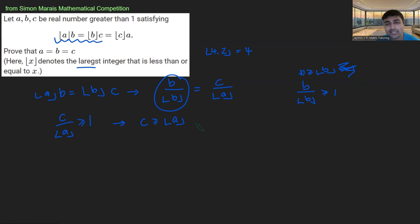I can go one step further with this. We know that floor of A is an integer. And in particular, it's an integer which is less than or equal to C. And so therefore, I know that floor of C must be at least floor of A.